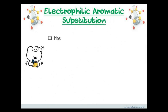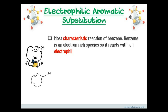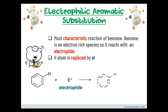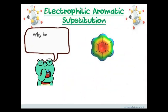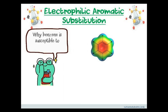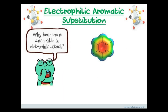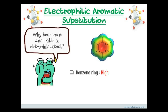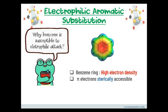Electrophilic aromatic substitution reaction is the most characteristic reaction of benzene. Benzene is an electron-rich species, therefore it reacts with an electrophile, where the hydrogen atom at the ring is replaced by the electrophile E+. Benzene is susceptible to electrophilic attack because the benzene ring contains a high electron density; therefore, the pi electrons are sterically accessible to attack.